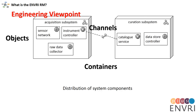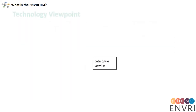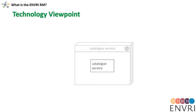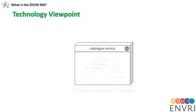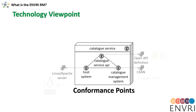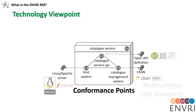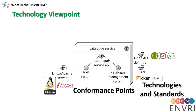Engineering objects are used to represent the distribution of system components. In the Technology Viewpoint, engineering objects are further refined to define conformance points, technologies, and standards. Technology objects represent the concrete dependencies between design and implementation.